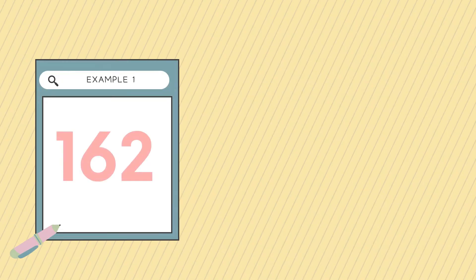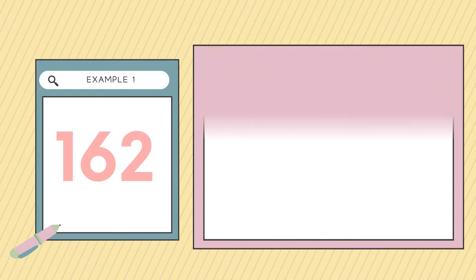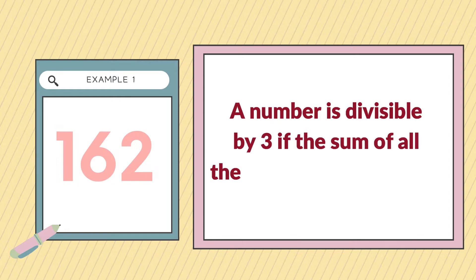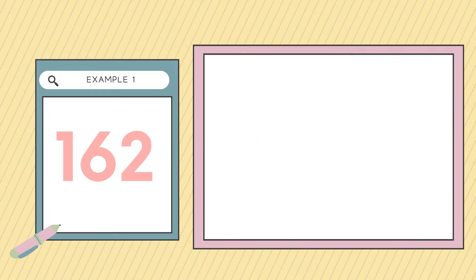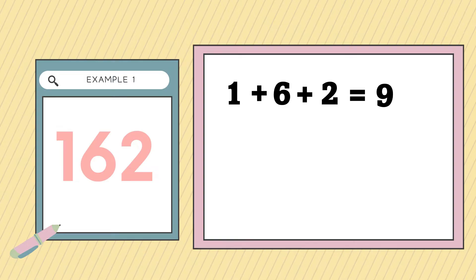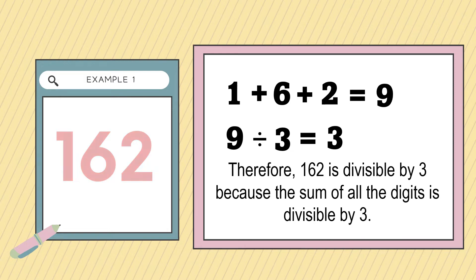For example, 162. Is 162 divisible by 3? Let's check. A number is divisible by 3 if the sum of all the digits is divisible by 3. So we're going to add all the digits of 162: 1 plus 6 plus 2. 1 plus 6 is equal to 7, plus 2 is equal to 9. Is 9 divisible by 3? 9 divided by 3 is equal to 3. Therefore, 162 is divisible by 3 because the sum of all the digits is divisible by 3.